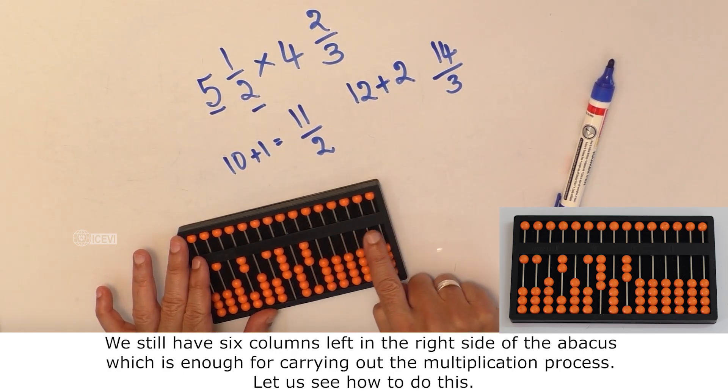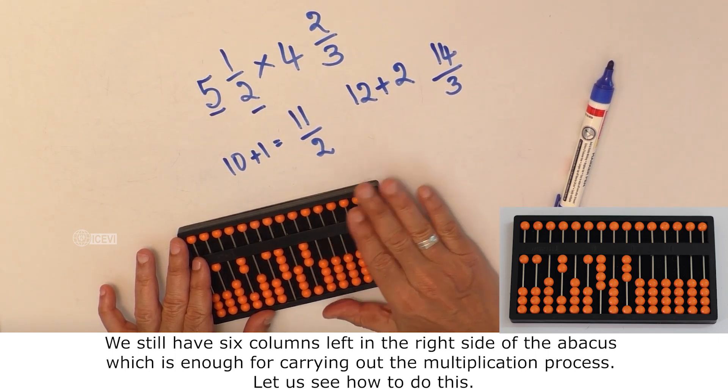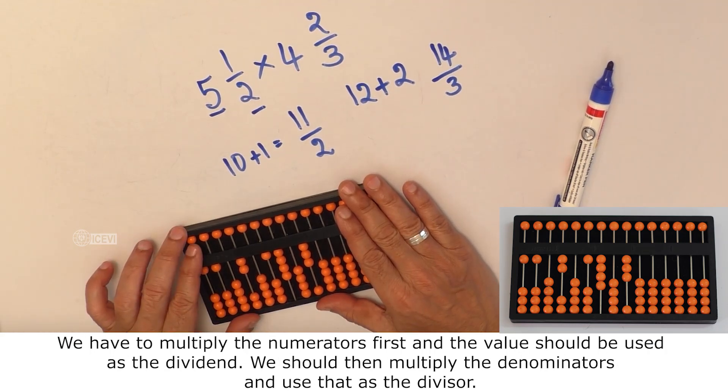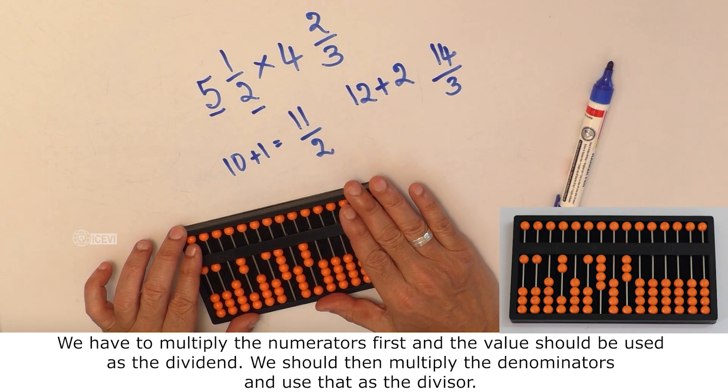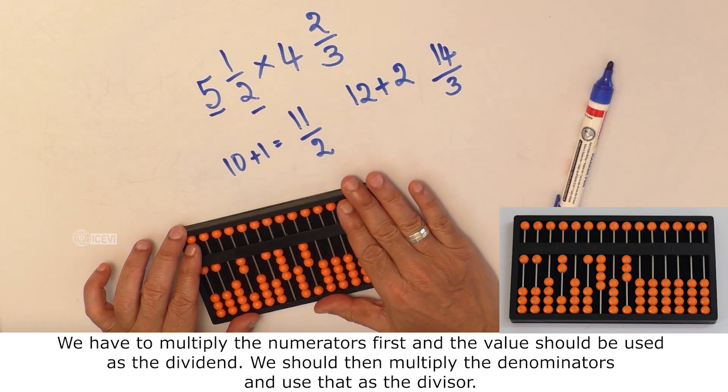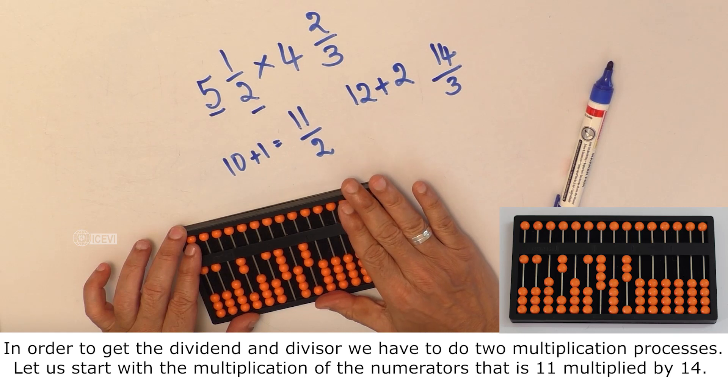We still have 6 columns in the right side of the abacus which is enough for carrying out the multiplication process. Let us see how to do this. We have to multiply the numerators first and the value should be used as dividend. We should then multiply the denominators and use that as the divisor.